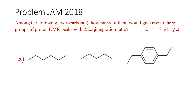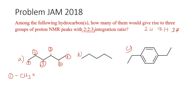We take compounds A, B, and C. For compound A, we identify signals 1, 2, and 3 — there are 3 signals. Signal 1 indicates the methyl group contributing 2 protons, signal 2 indicates another methyl group contributing 2 protons, and signal 3 is another methyl group contributing 2 protons. So the ratio is 2:2:3 — wait, let us check more carefully.